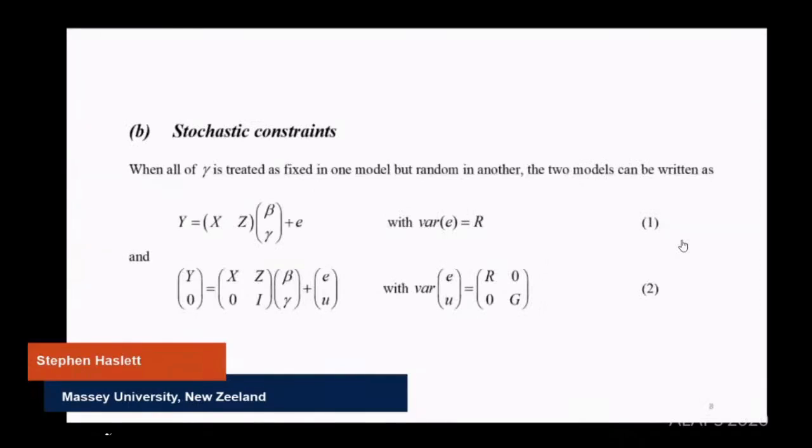Stochastic constraints. When gamma is treated as fixed in one model and random in another, the two models can be written this way. The first is where beta and gamma are fixed, so there's only one variance for the error process. The second is the stochastic constraints construct from Rao and Tottenberg. You'll see there's an additional equation at the bottom that says gamma equals minus u. The point is it cleverly incorporates the additional information relating first order properties to second order properties for the random parameters.